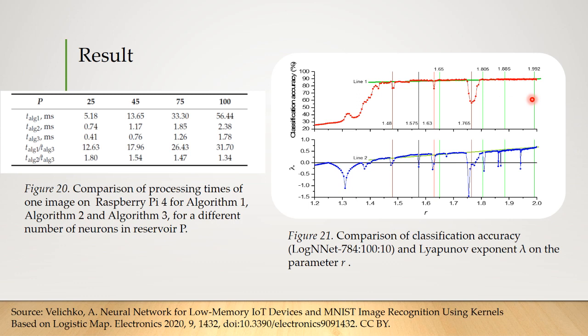Local maxima of classification accuracy correlate even weaker. Nevertheless, in a number of cases, for example, for R equal to 1.65 and 1.805, local maxima of classification accuracy arise at the boundary of strong chaos and the ordered behavior of the logistic mapping. The important role of the chaotic dynamics of the reservoir was highlighted in many research papers. A detailed study of the influences of the chaos parameter of the logistic mapping on the classification accuracy of the LogNNet neural network can be a topic for future research.